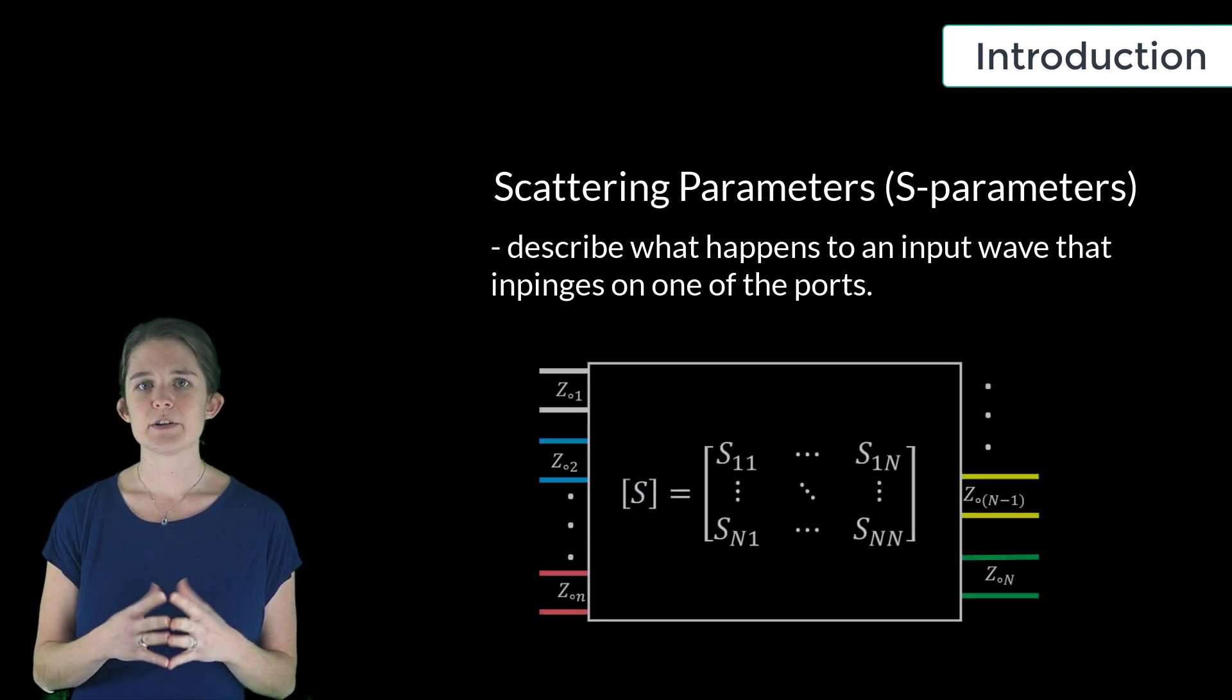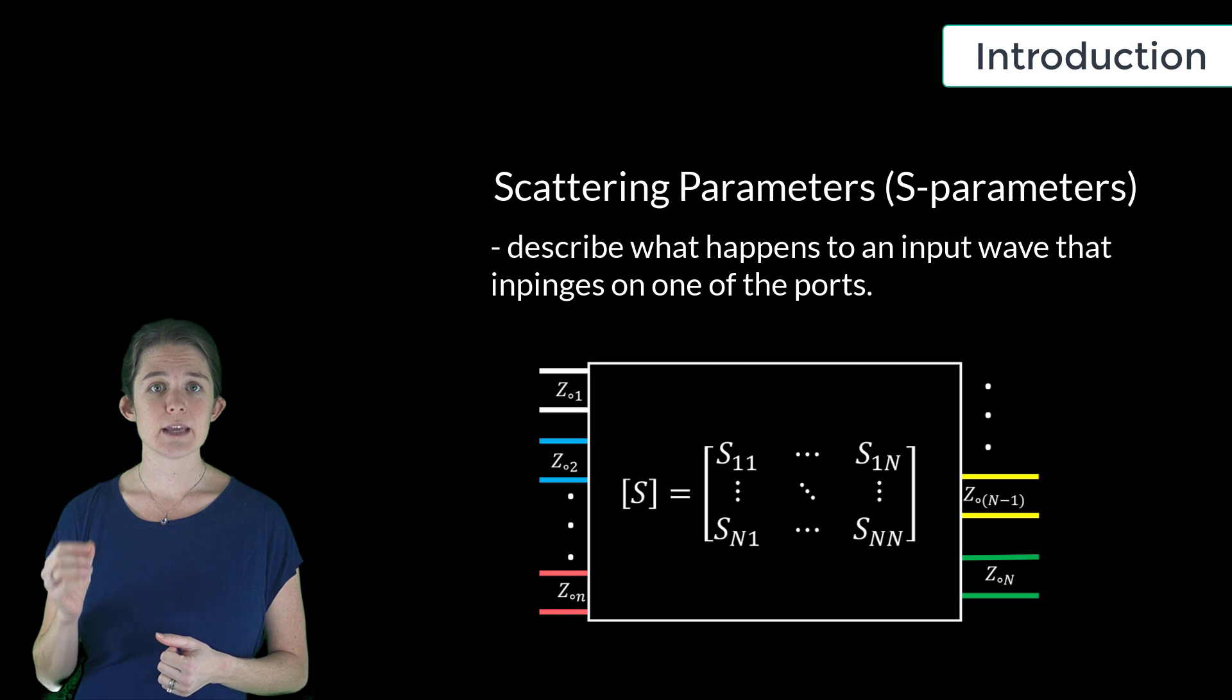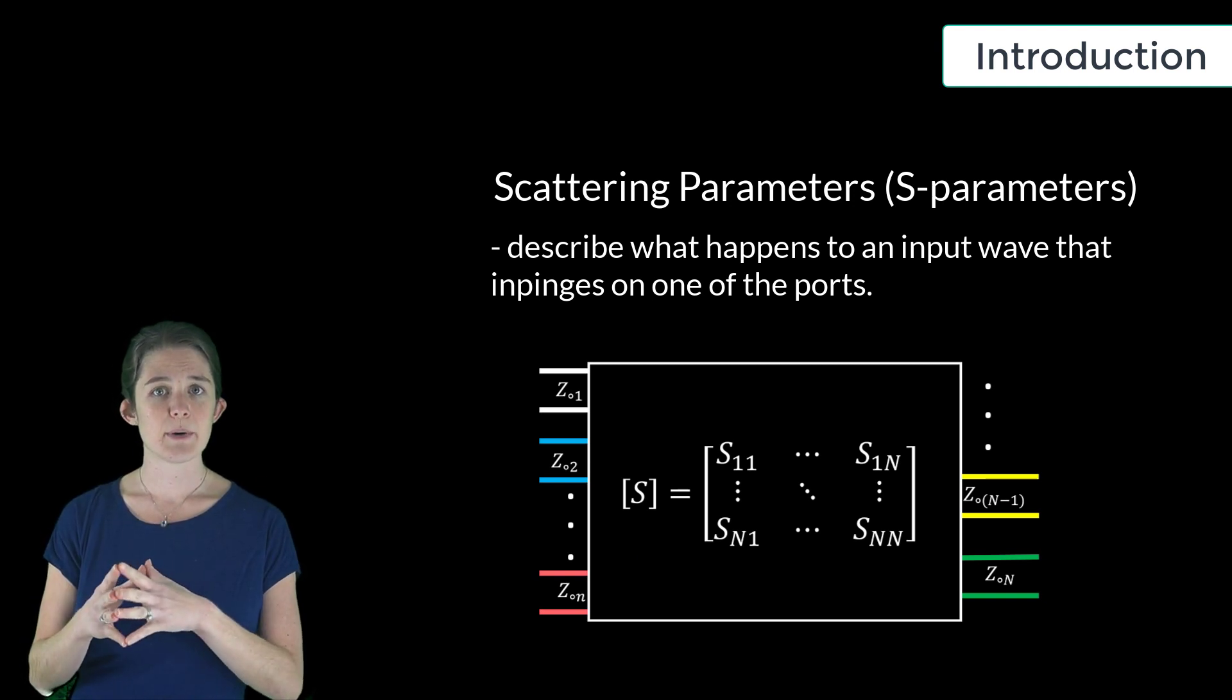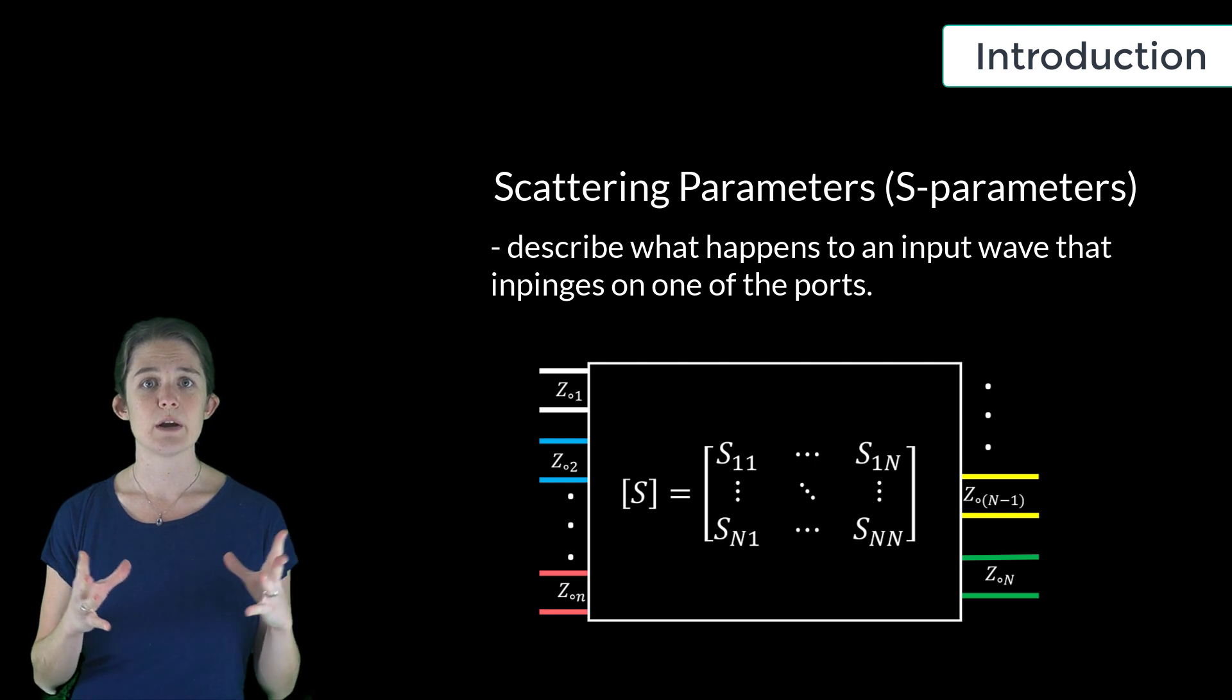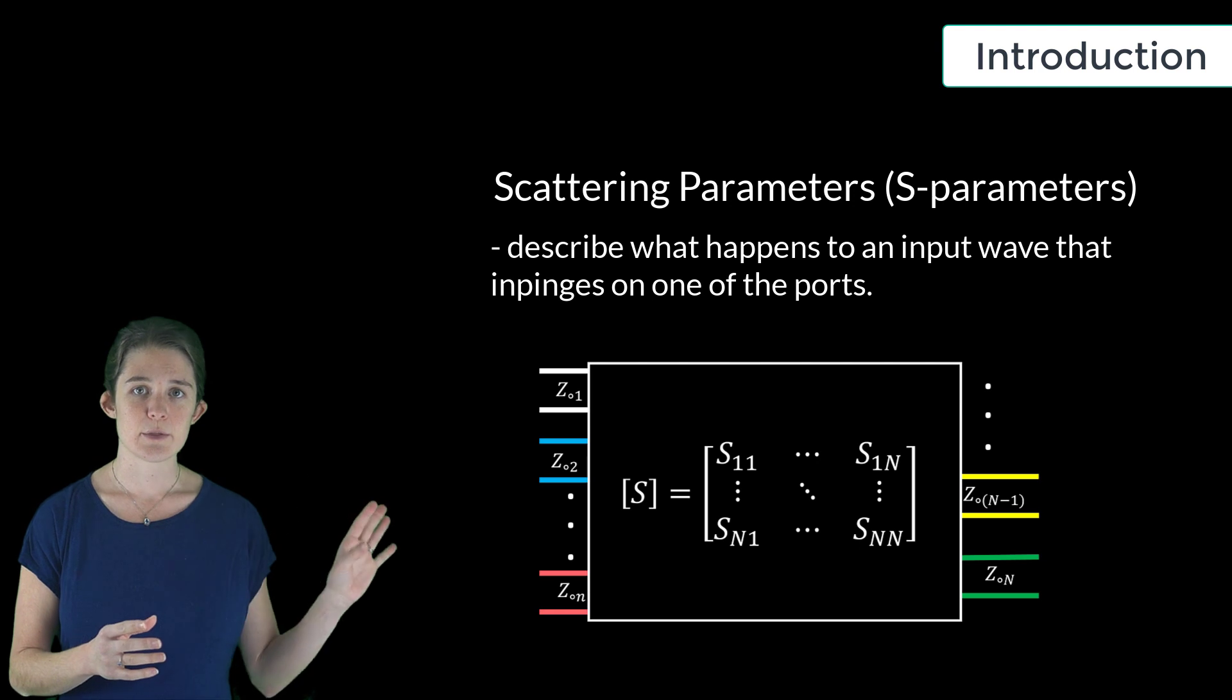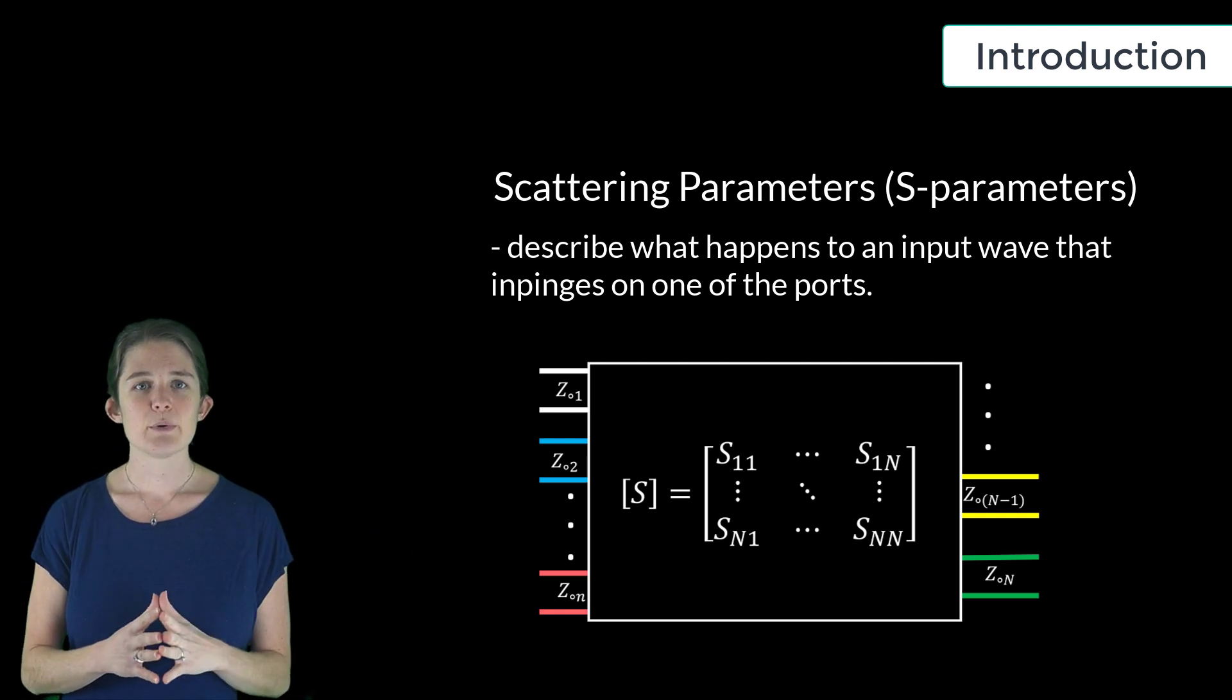The scattering parameters of an n-port network consists of an n-by-n matrix, where each matrix element describes a possible trajectory for a voltage wave impinging on a port, either reflecting back out that same port, or transmitting through to another port. We will first talk through the definition of the S-parameters, and then we will work through an example.